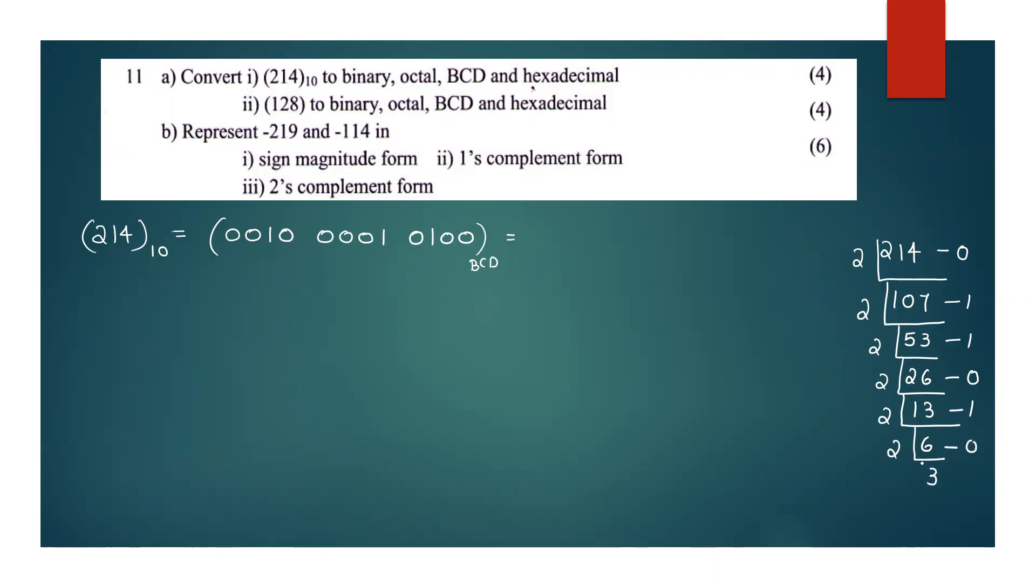3 divided by 2 is 1. Remainder 1. 1 divided by 2 is 0. Remainder 1. So we have 11010110.